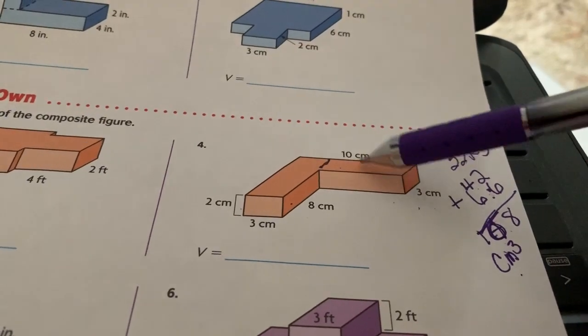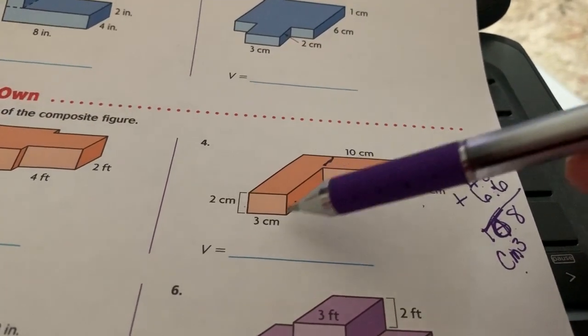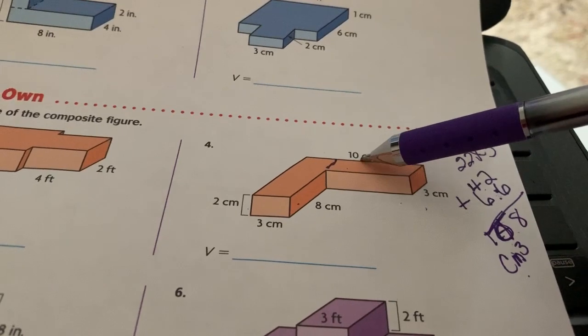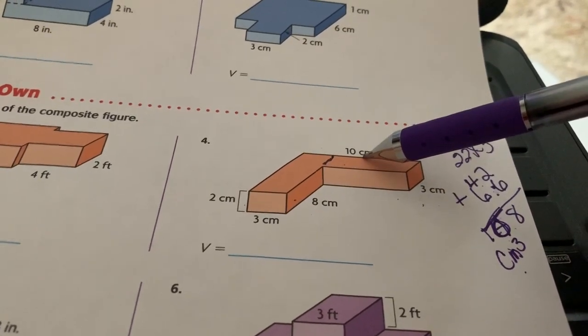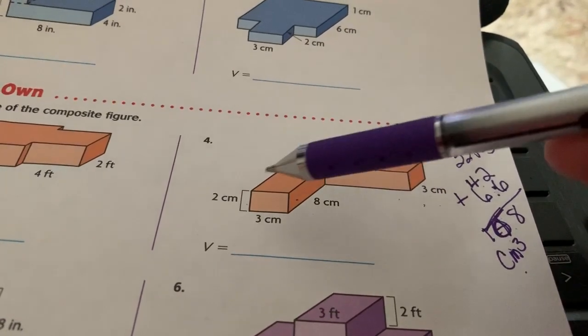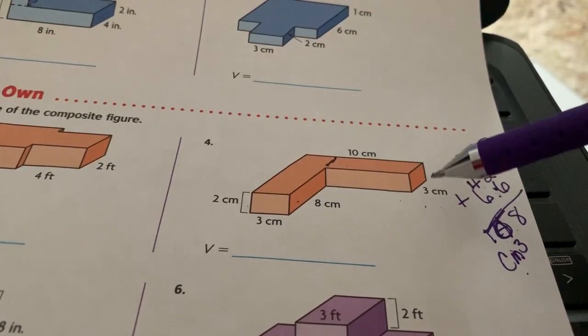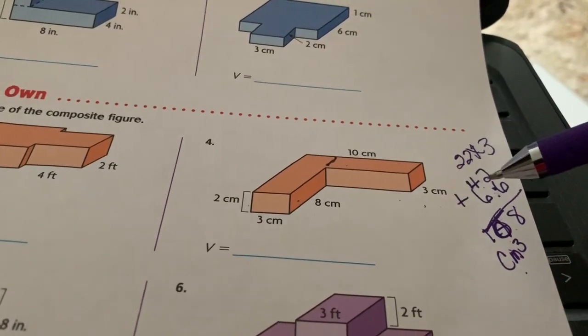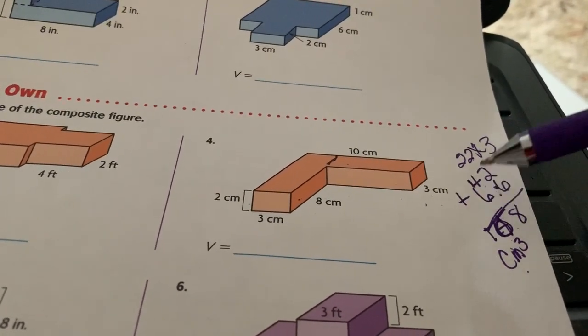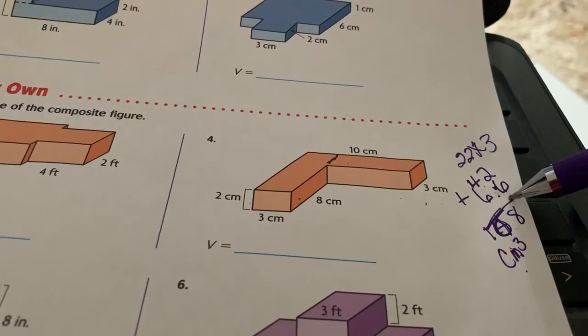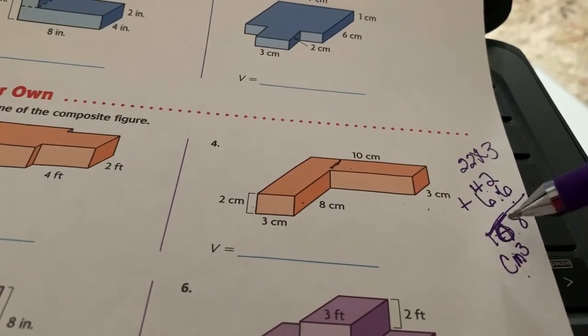For this length, I have to subtract that 3 from it - it's going to be 10 minus 3, which is 7. So here I have 7 times 2, which is 14, times 3, which is going to be 42. Then I take those two and add them together, and my answer is going to be 108 cubic centimeters.